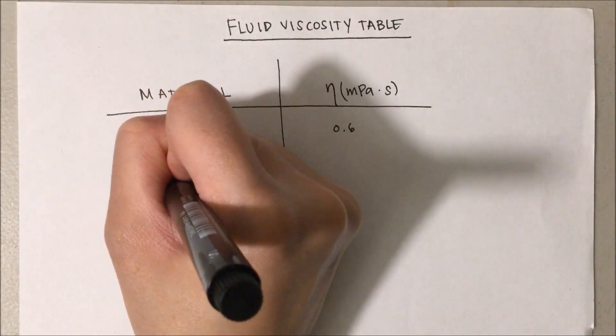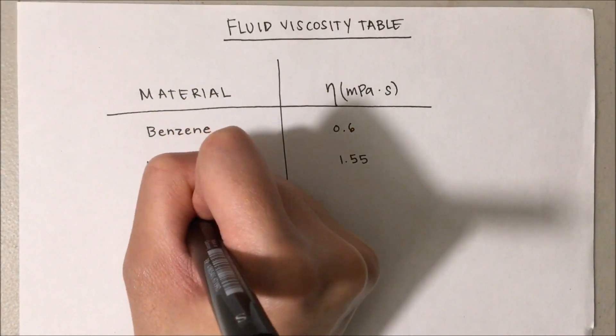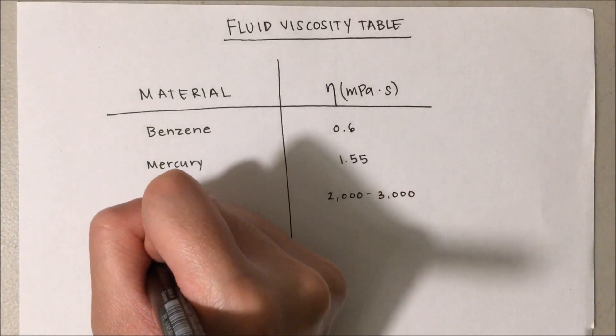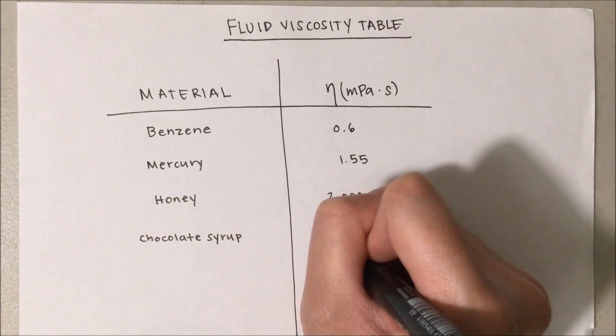Do notice that the apparent viscosity has the same unit as absolute viscosity. From the table, we could tell that benzene and mercury are Newtonian fluids, while honey and chocolate are non-Newtonian fluids.